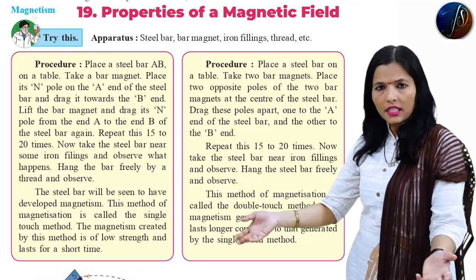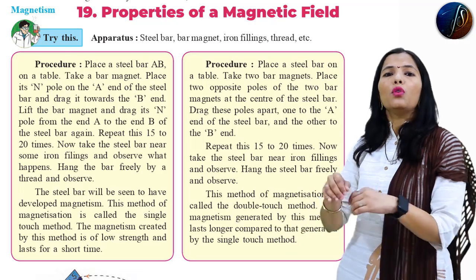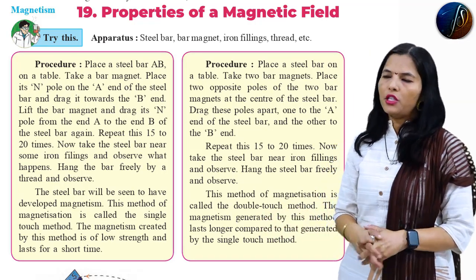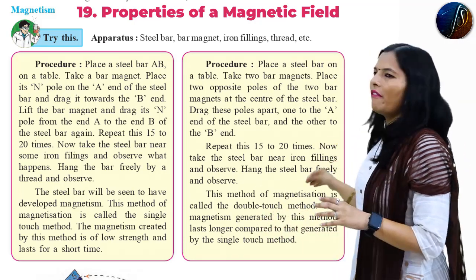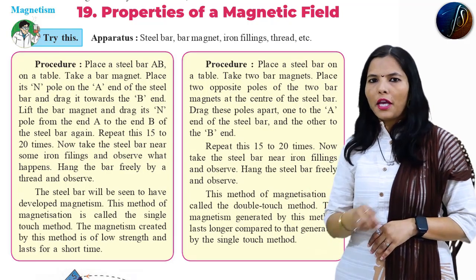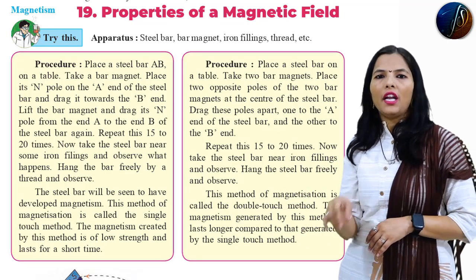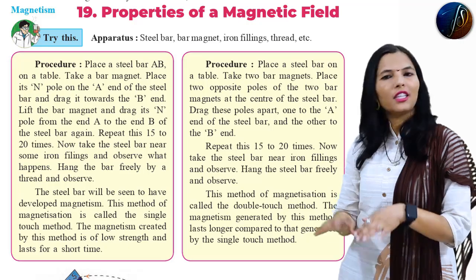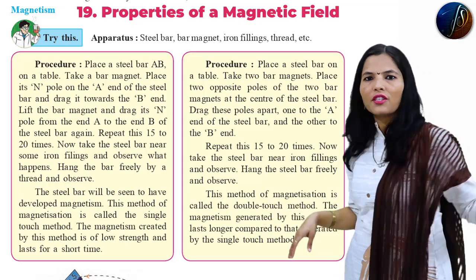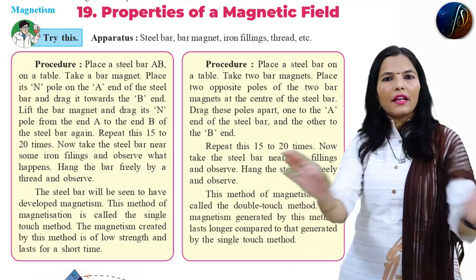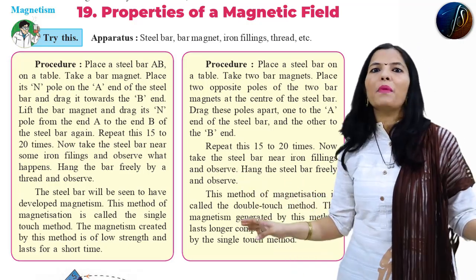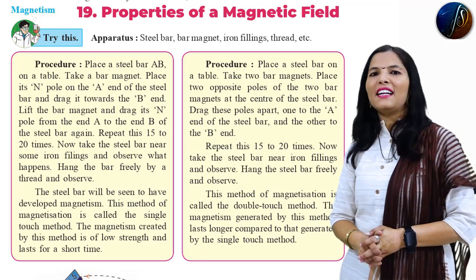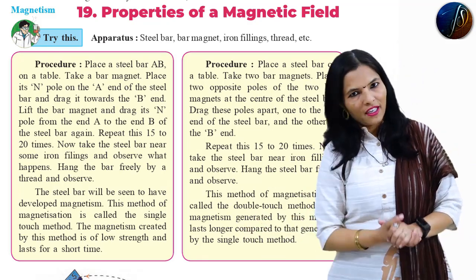The magnetism produced by the single touch method is of very low strength, and it lasts for a very short period of time. After one or two minutes, if you try to attract iron filings to the steel bar, they will no longer be attracted — that means the magnetism has ended. So in this way we study the single touch method.